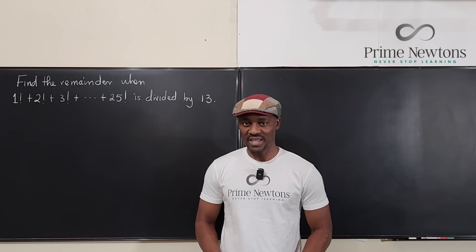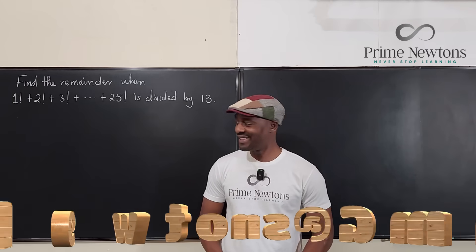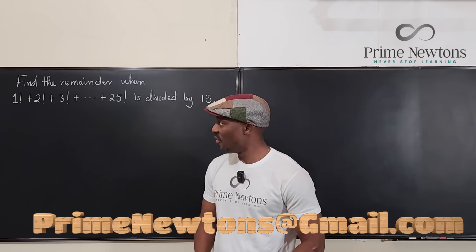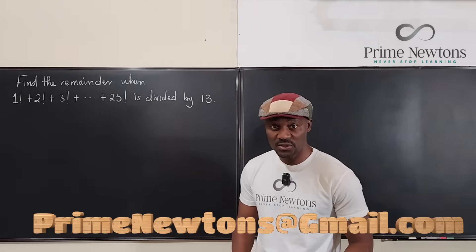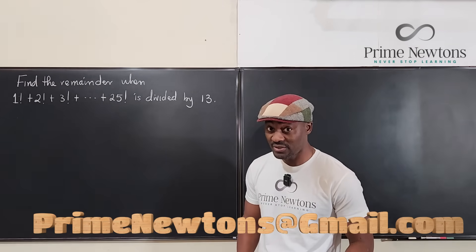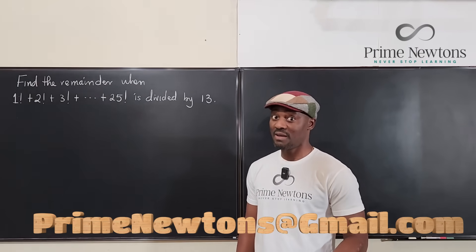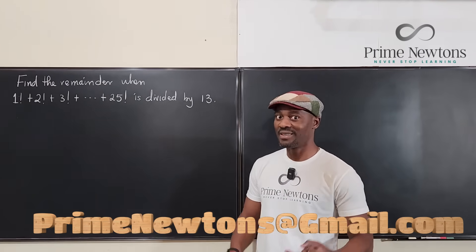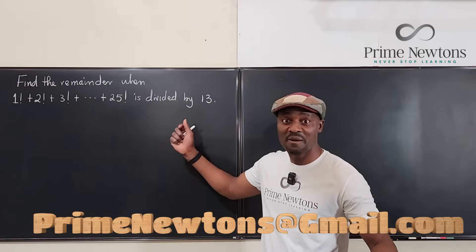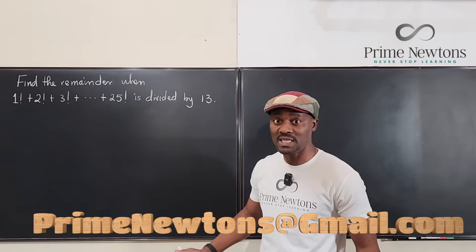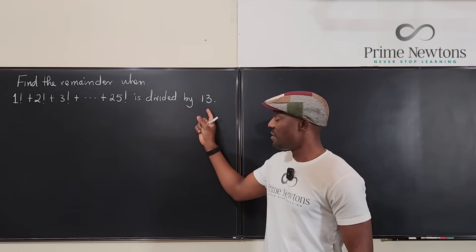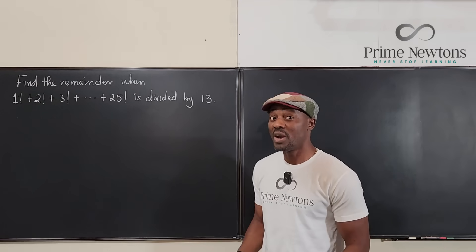Welcome to another video. We want to find the remainder when 1 factorial plus 2 factorial plus 3 factorial plus ... plus 25 factorial is divided by 13. Notice that they picked the number 13 because 13 is a prime number.